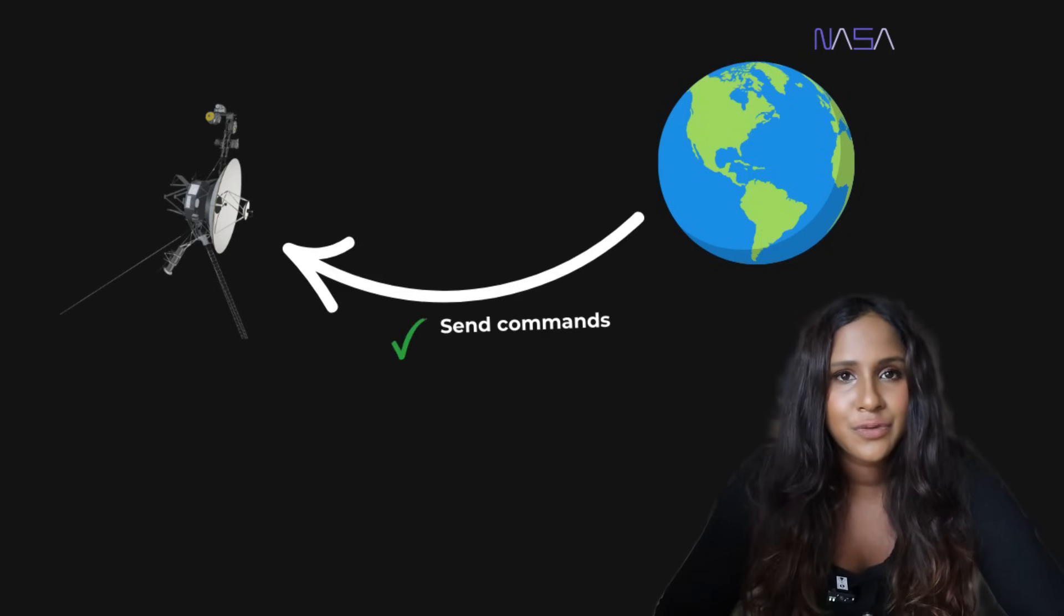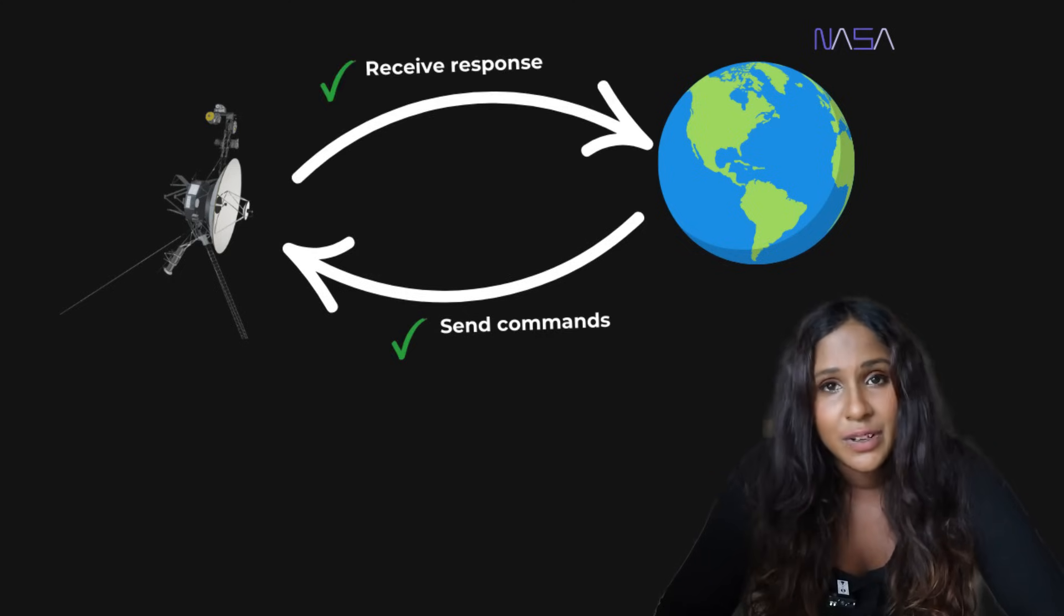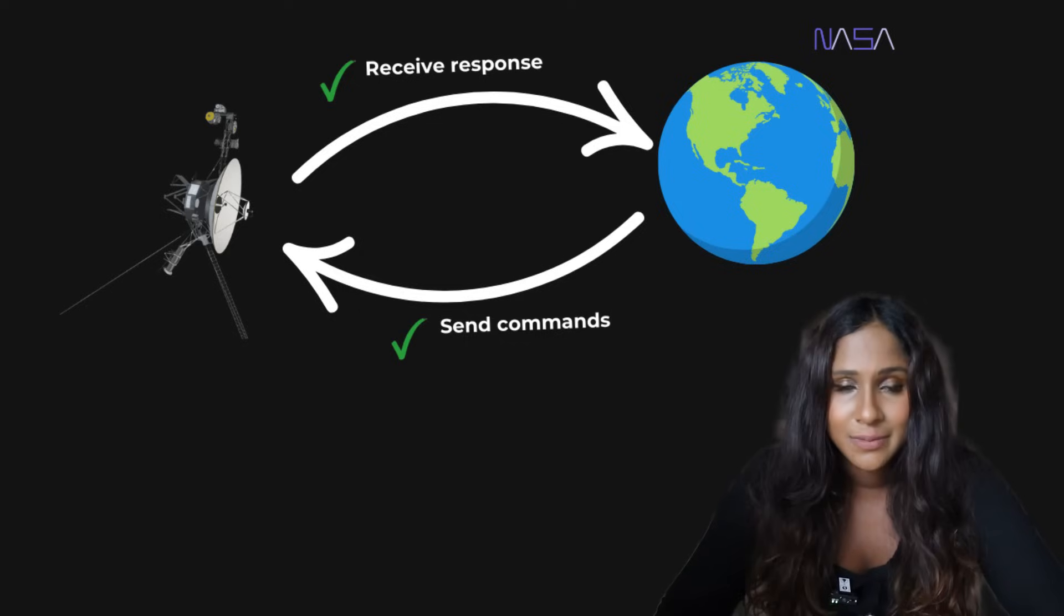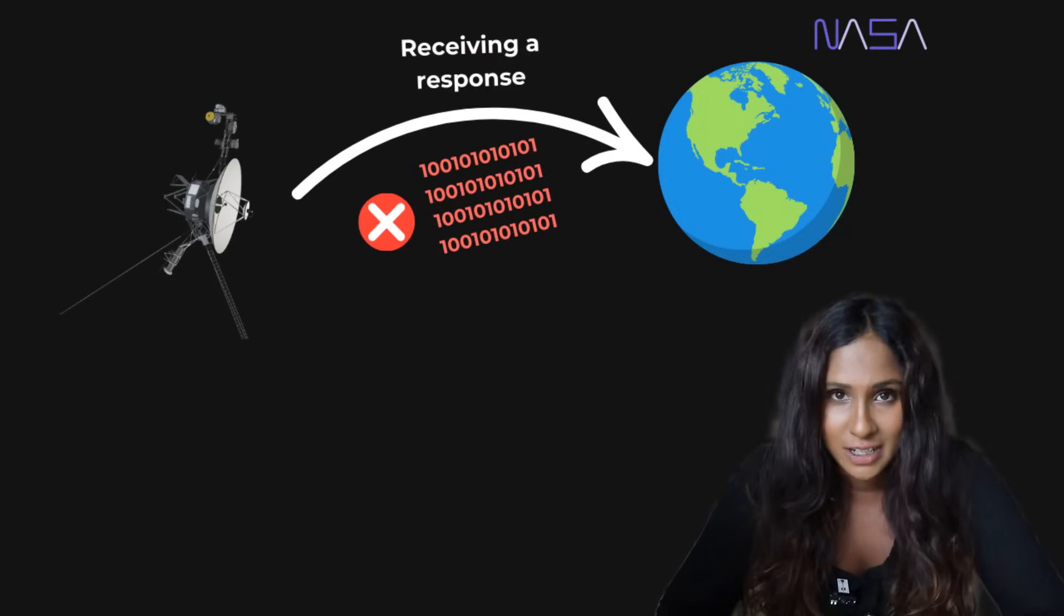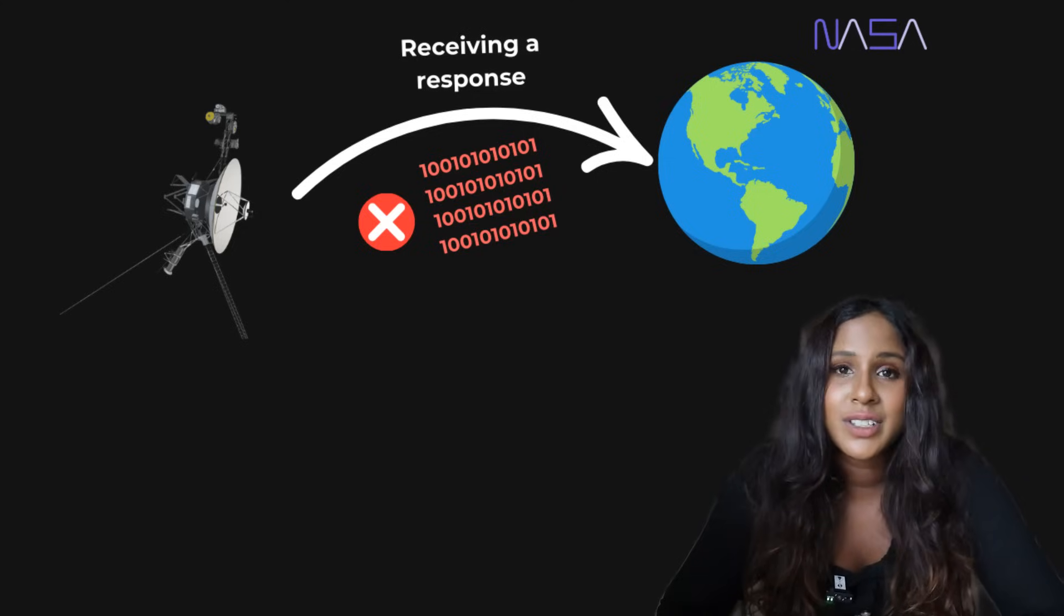And that's how they were able to single out where the issue was from. So they then performed some general troubleshooting steps. First, they did some command checks. Engineers sent commands to Voyager 1 just to see if it would respond. It did, which was a good sign. They then performed some reset attempts. They did try the good old-fashioned restart method on the flight data subsystem. But again, it did not fix the glitch. The data was still nonsensical.